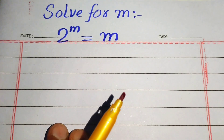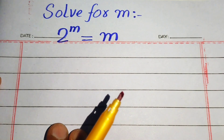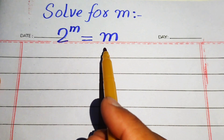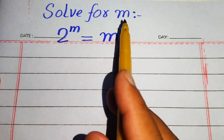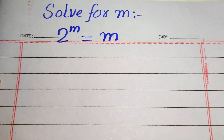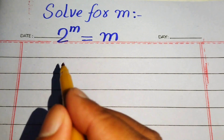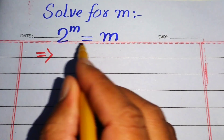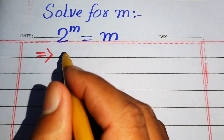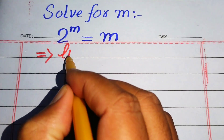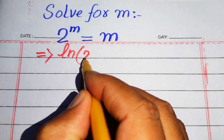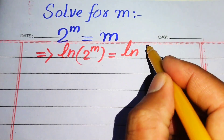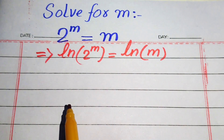Hello everyone, welcome. We solve this math problem where 2 to the power of m equals m, and we solve for the values of m. The very first step is to take the natural log on both sides. When you take the natural log on both sides, it is written as log of 2 to the power of m equals to natural log of m.